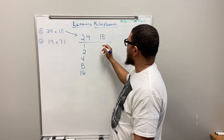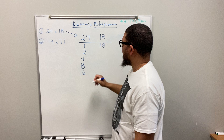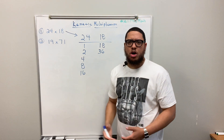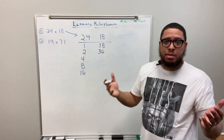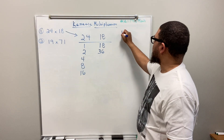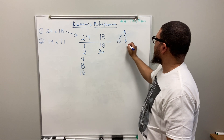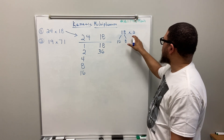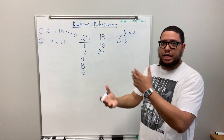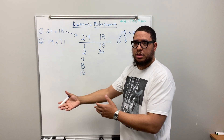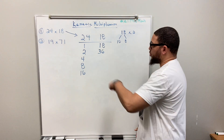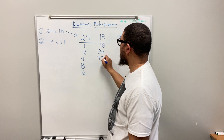Now in the second column where 18 is, we start with that original number 18 and do the same doubling. Double 18 gives us 36. If you don't know 18 times 2 from memory, use the distributive property: break 18 into 10 and 8, then 10×2=20 and 8×2=16, so 20+16=36. You can break it down further: 20+10=30 and 30+6=36. Then double 36 to get 72: 30×2=60, 6×2=12, and 60+12=72.